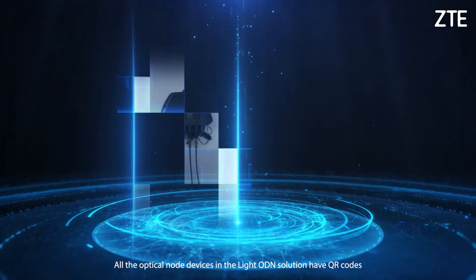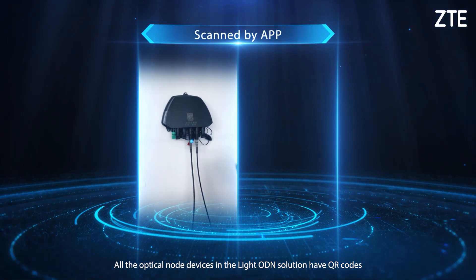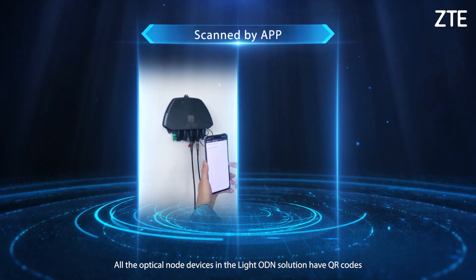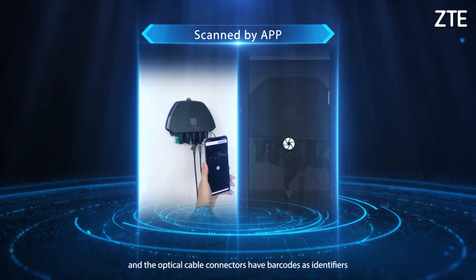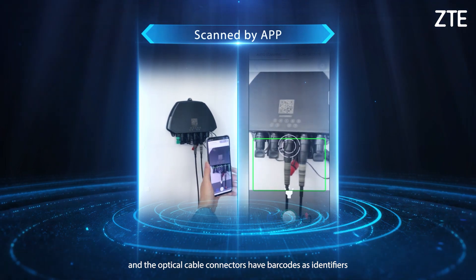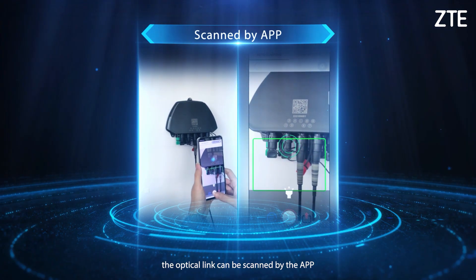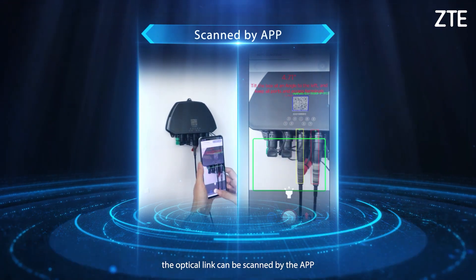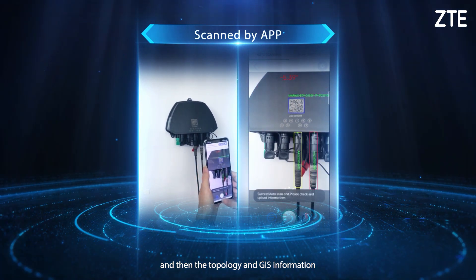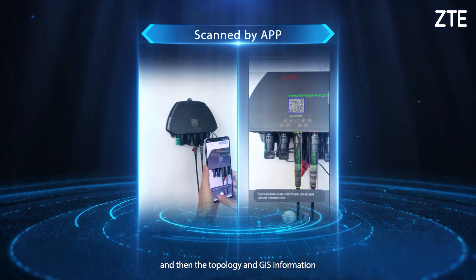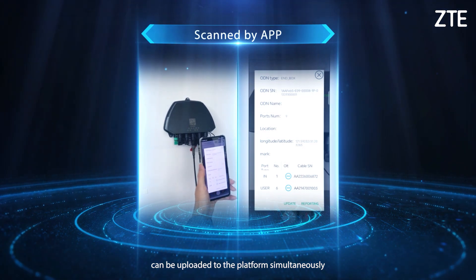All the optical node devices in the Light ODN solution have QR codes, and the optical cable connectors have barcodes to use as identifiers. After deployment, the optical link can be scanned by an app, and then the topology and GIS information can be uploaded to the platform simultaneously.